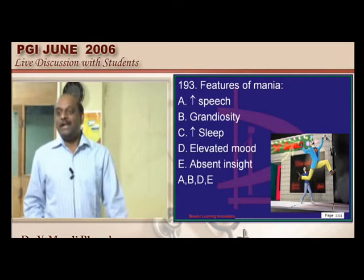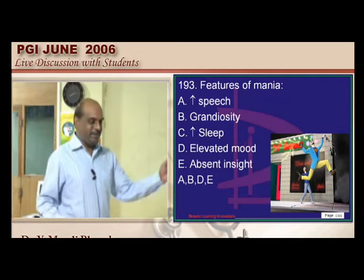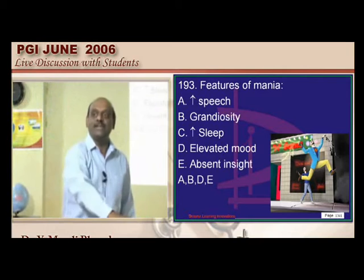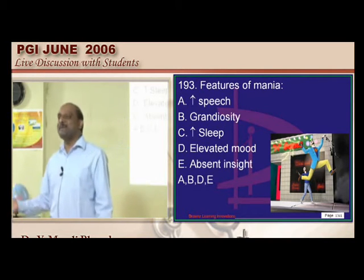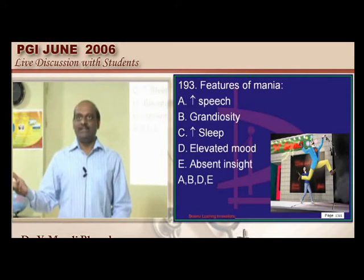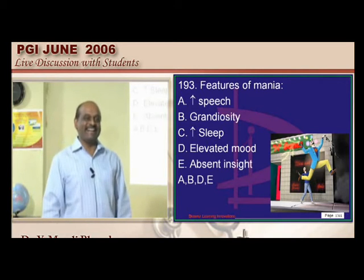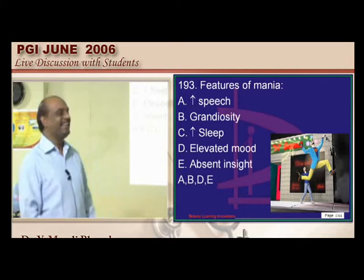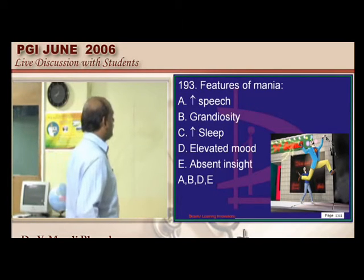Features of mania include increased speech, grandiosity, elevated mood, decreased sleep, and absent insight. For example, a manic individual might lecture for four hours and arrive in a Mercedes to deliver a lecture. Importantly, it is decreased sleep — not increased sleep — along with elevated mood and absent insight that are the key features to remember.